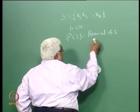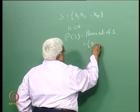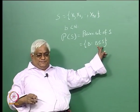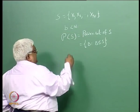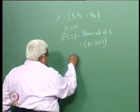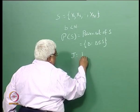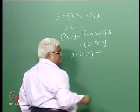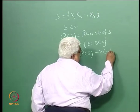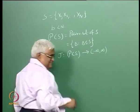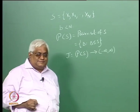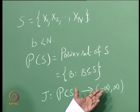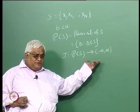The power set of S is the set of all B such that B is a subset of S. Now the objective function J should be defined from power set of S to, say, minus infinity to plus infinity. It may be 0 to infinity also.